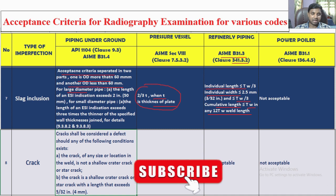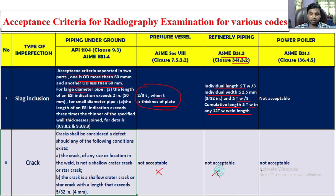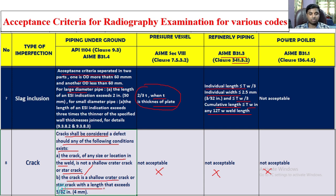Cracks are not acceptable everywhere. However, for API 1104, cracks will be considered a defect should any of the following conditions exist: a crack of any size or location in the weld that is not a shallow crater crack or star crack. If it is a shallow crater crack or star crack with a length exceeding 4 mm, it will be rejected.